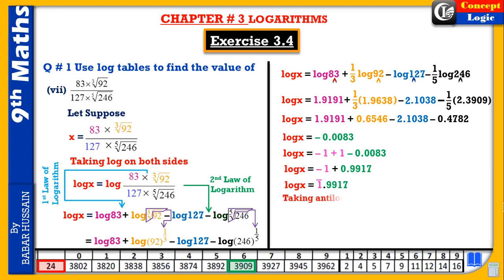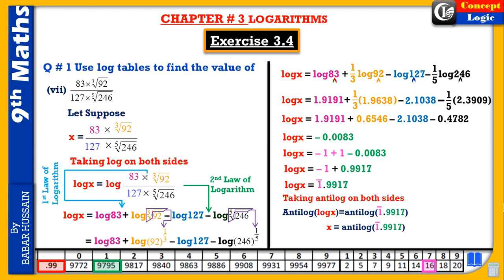Taking antilog on both sides: antilog of 0.9917 gives approximately 9811 from the table, with the difference adjustment. The characteristic is negative 1, meaning we move the decimal one digit to the left from the point of reference. This gives our final answer for the 7th part.